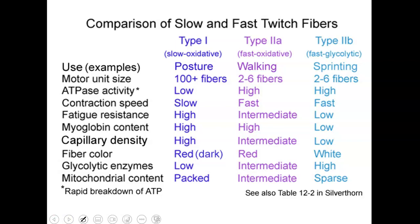Type 1, or slow oxidative fibers, are used for things like posture. These motor units have about 100 or more fibers attached. ATPase activity is low, contraction speed is slow, and fatigue resistance is high. Myoglobin content is high, capillary density is high — you want lots of blood for oxygen delivery and carbon dioxide removal. The fiber color is dark red. Glycolytic enzymes are low and mitochondrial content is packed — lots of mitochondria in there.